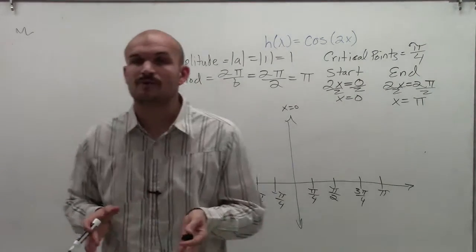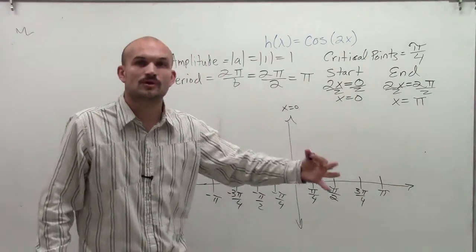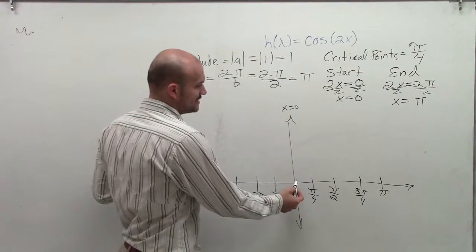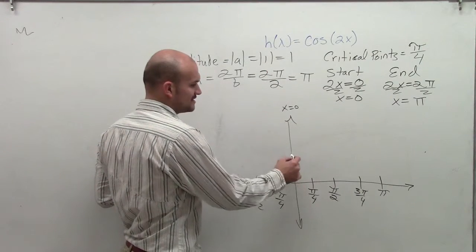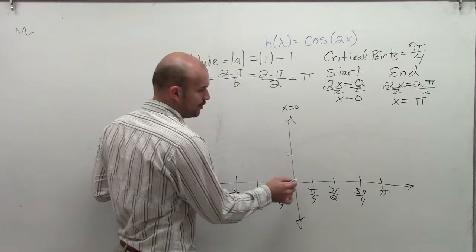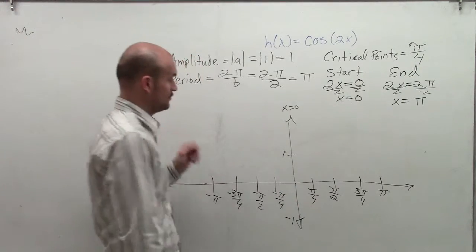Now we want to go ahead and label our y-axis to help us work in our amplitude. The amplitude is going to be 1. That means my graph, the half distance of the max to the minimum value, is going to be 1, so the total distance will be 2. I go to 1 to negative 1.